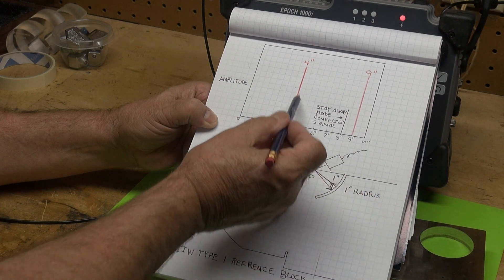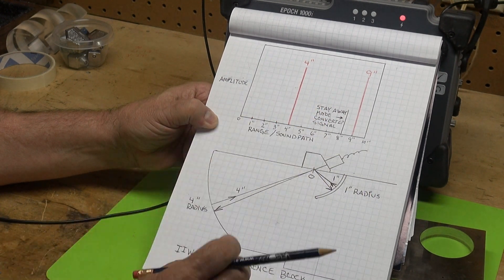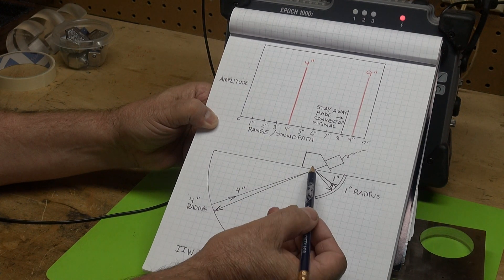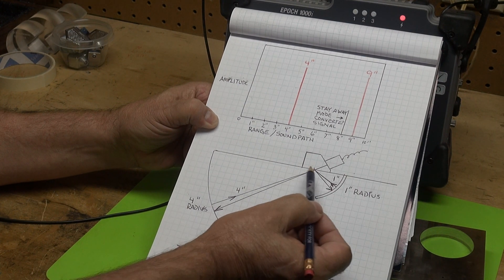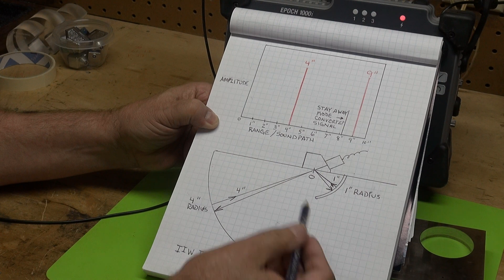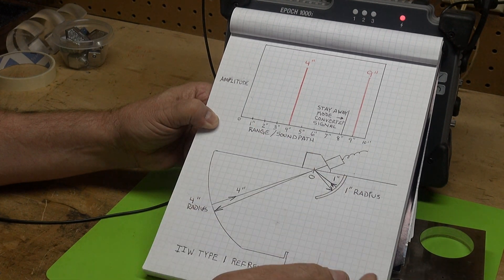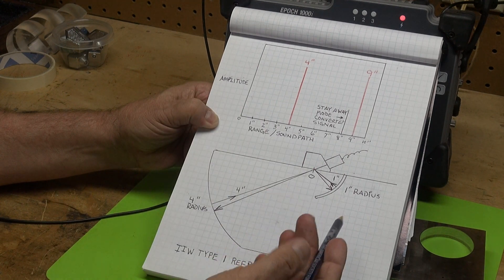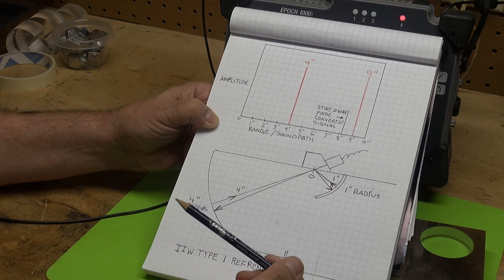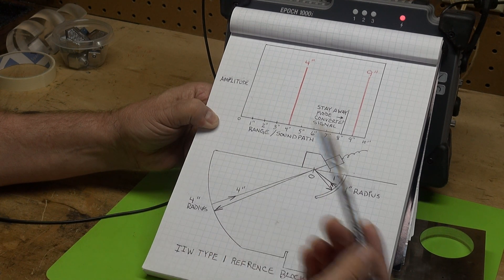Therefore it records that reflection. I know some of you are saying that's 8 inches of sound path. That's correct, but measured is 4 inches. I'm assuming that the electronics inside of our ultrasonic testers does a divide by 2.